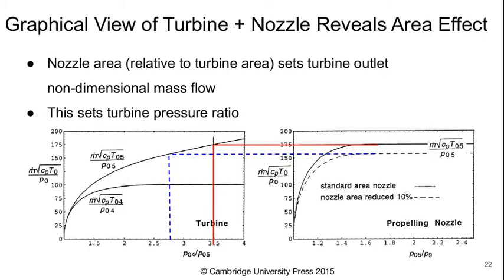To understand how the nozzle governs what's happening in the turbine, we can look at this graphically and also see the impact of nozzle area on turbine performance. The nozzle area relative to the turbine area essentially sets the turbine outlet non-dimensional mass flow, which then sets the turbine pressure ratio. Starting with the figure on the right showing what's happening at the nozzle exit, we're in a regime where the nozzle is choked, so the non-dimensional mass flow is a constant. Going across to a plot of the exit non-dimensional mass flow from the turbine at whatever its area is, that specifies some pressure ratio for the turbine. If we had a smaller nozzle exit, we'd have a smaller value and end up with a lower pressure ratio for the turbine.